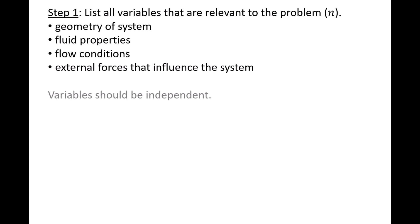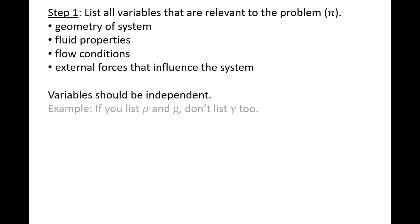The variables should be independent of each other, which means you cannot create one variable from the other variables. For example, if fluid density rho and gravitational acceleration g are in the list of variables, then the list should not also include the specific weight gamma, since gamma is the product of rho and g.